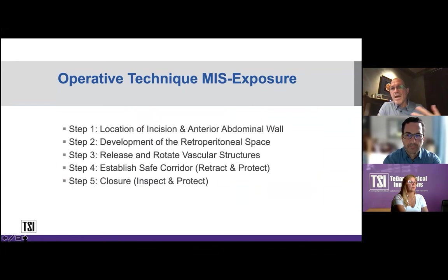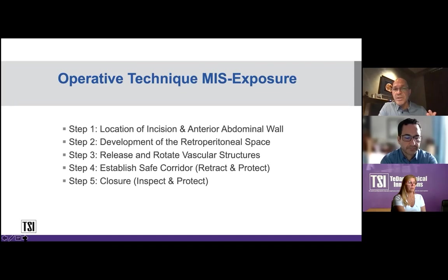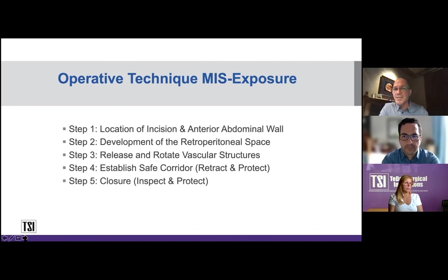The way I view the five steps to approach the spine: first I decide where to make my incision, then I develop the retroperitoneal space, then I move blood vessels off the anterior aspect of the spine — what I call 'release and rotate,' not proximal-distal control. I don't use umbilical tape. I release vessels and move them off the spine. Once you do that, you establish a safe corridor — that's where your retractor system comes into play. Then it's cleanup time: inspect the ureter, inspect the blood vessels, then do your closure.